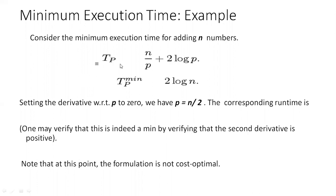So tp = n/p + 2 log p. Executing the derivative with respect to p of the right-hand side of this equation and equating to 0, we get the solution for p as below. Setting the derivative to 0 we have p = n/2, and we finally get tp = 2 log n. One may verify that this is indeed a minimum by verifying that the second derivative is positive.